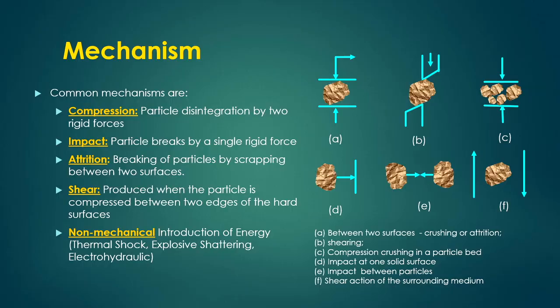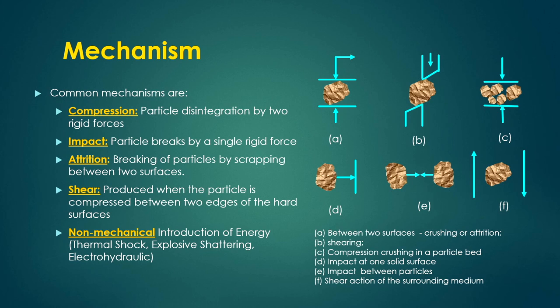The next question is: what will be the mechanism by which we can achieve reduction of particle size? There are different mechanisms. Basically, there are four types: compression, impact, attrition, and shear. Other than these basic mechanisms, you can use different provisions or mechanisms such as introduction of energy from thermal shock, explosive shattering, and electro-hydraulic forces.